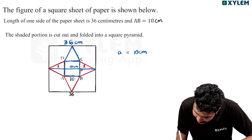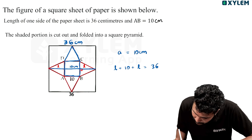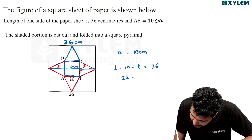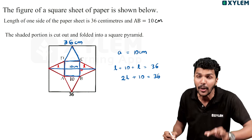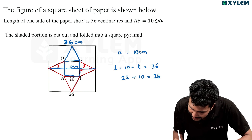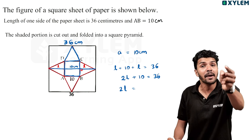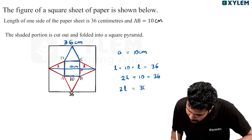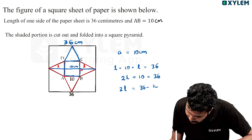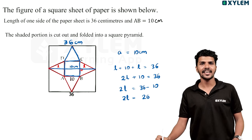Why do you think that? L plus 10 plus L is equal to 36. L plus 10 plus L is equal to 36. So you can see L is equal to L. L is equal to 36.